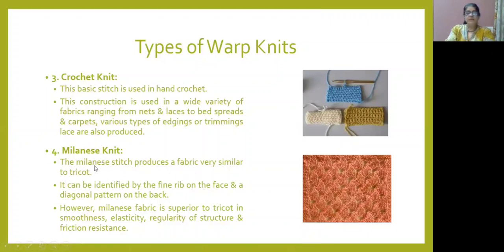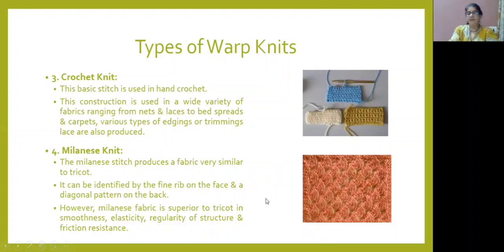Milanese knit is similar to Tricot knit but has a fine rib construction on the face side and produces diagonal patterns. Milanese fabric is superior to Tricot in smoothness and elasticity, and its fabric structure is regular and friction resistant.